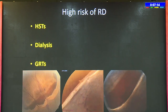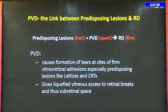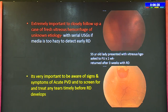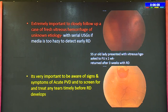Cystic retinal tuft is an elevated round lesion of glial tissue with traction from condensed vitreous, resulting in horseshoe tears or operculated breaks during PVD. They occur in 5% of eyes and are associated with up to 10% of non-traumatic RDs. Understanding PVD is extremely important — it is the link between predisposing lesions and RD. PVD causes tears at sites of firm retinal adhesion, especially with lattice and CRTs, giving liquefied vitreous access to retinal breaks. 10–15% of patients with acute PVD are found to have a retinal tear. Pigment in the anterior vitreous is an important clue; vitreous hemorrhage increases the risk of tears to 70%, as it usually results from avulsed retinal vessels.